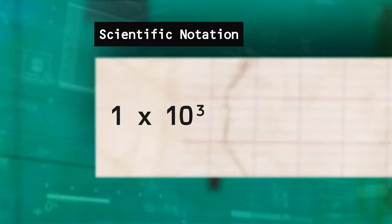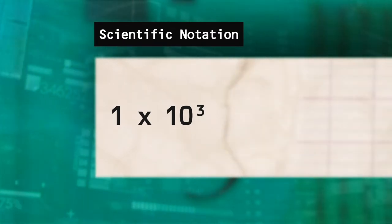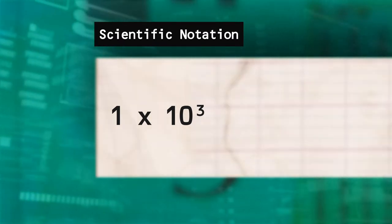We typically use scientific notation to write large and small numbers. Let's take a closer look at what that means. Scientific notation shows how many places the decimal point moves in the number.